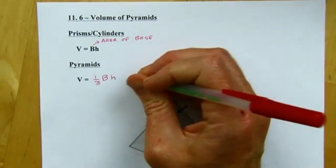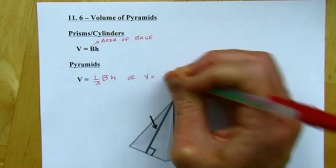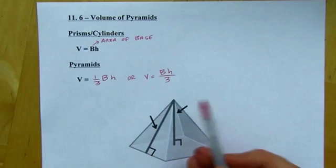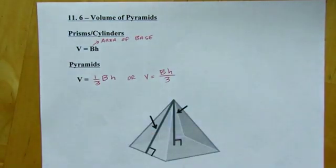You also sometimes see the formula written like this, because dividing by three is the same as multiplying by a third, so that's fine, whichever version you prefer will work fine. So first, I'm just going to talk about some vocab associated with a pyramid.